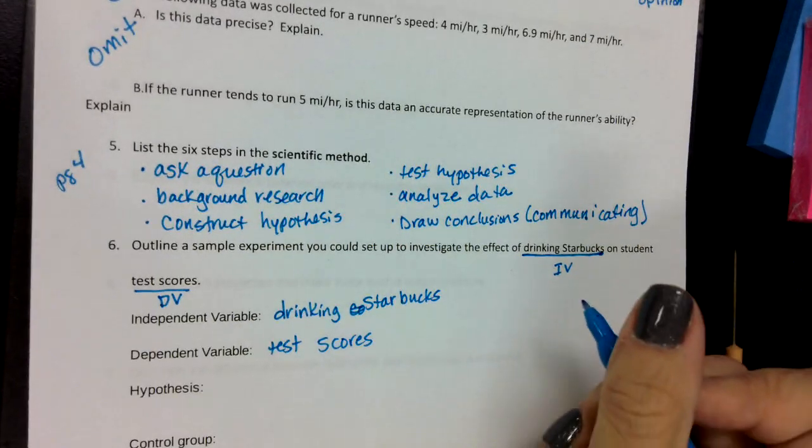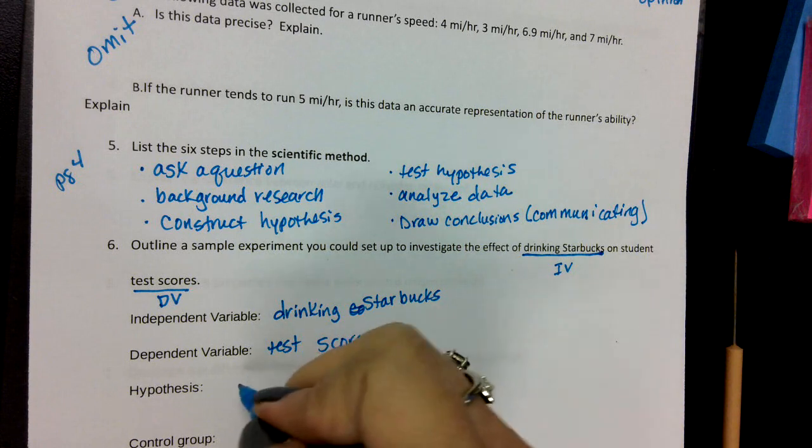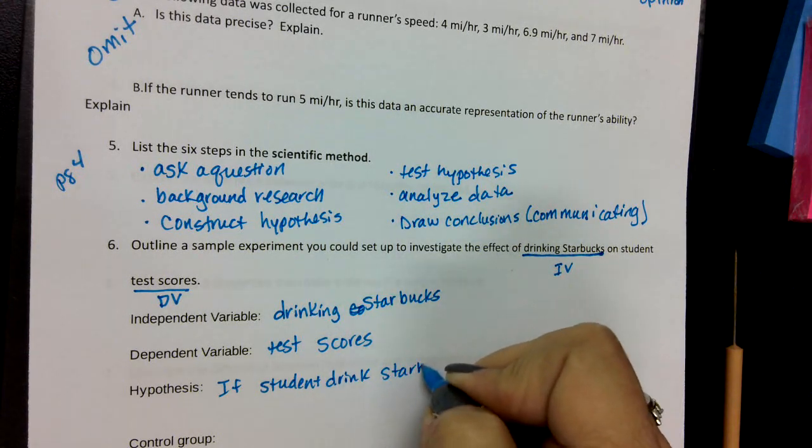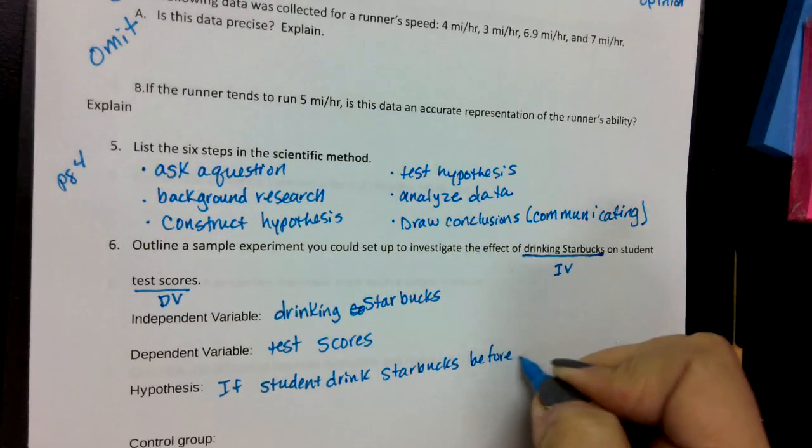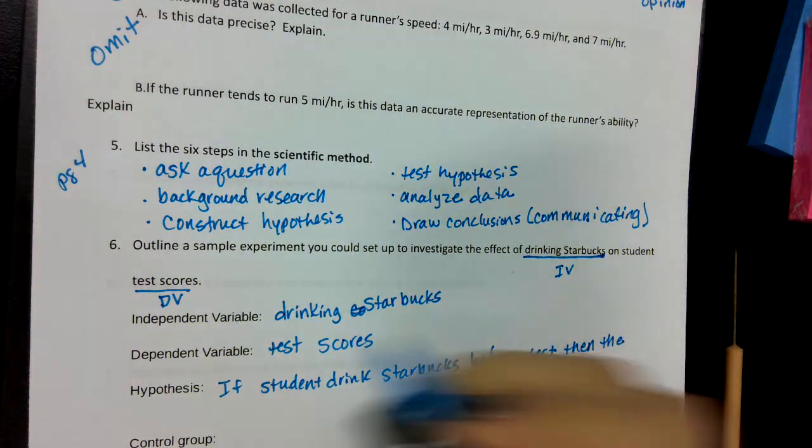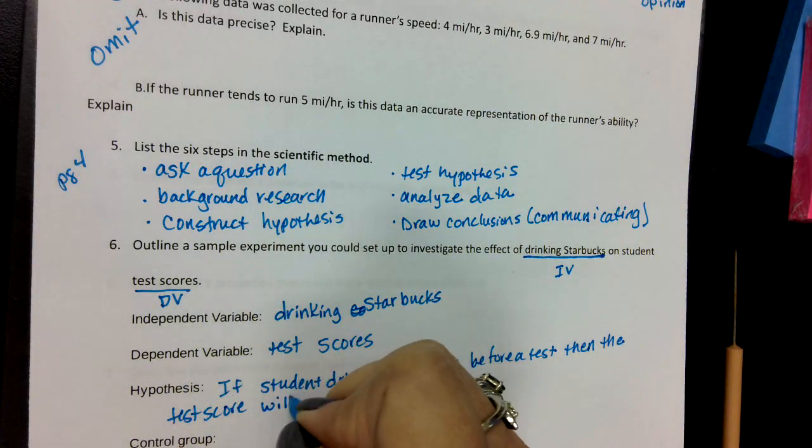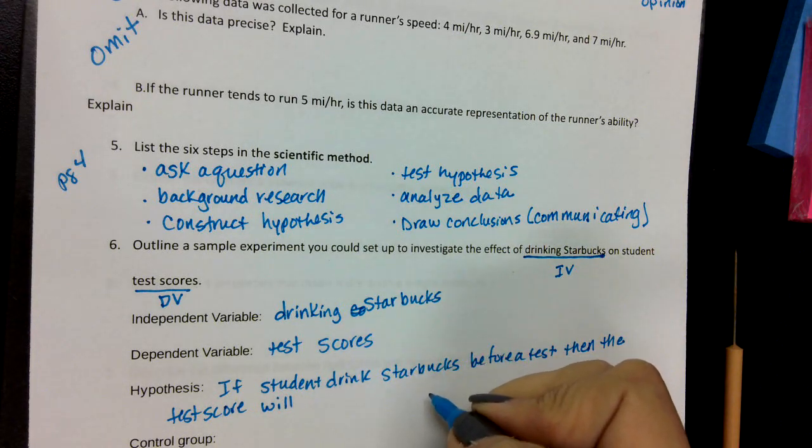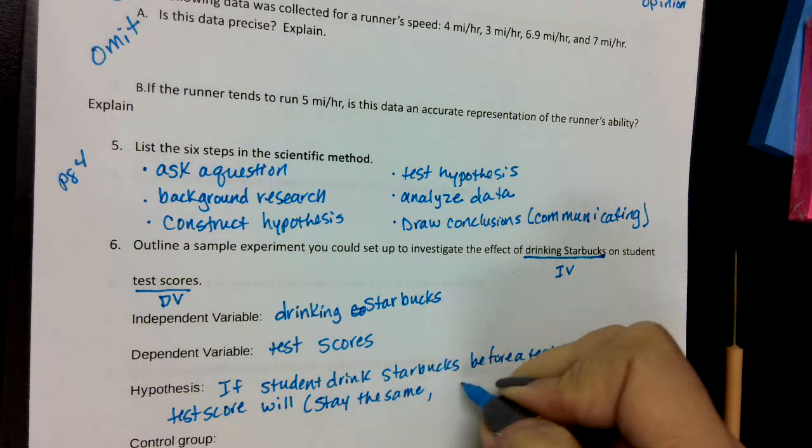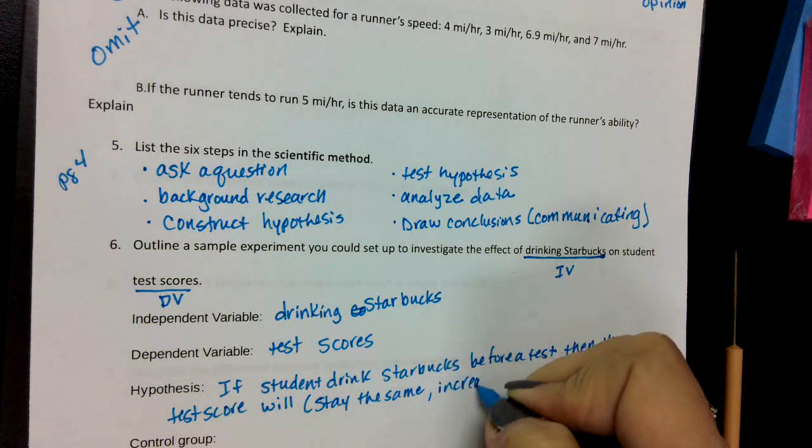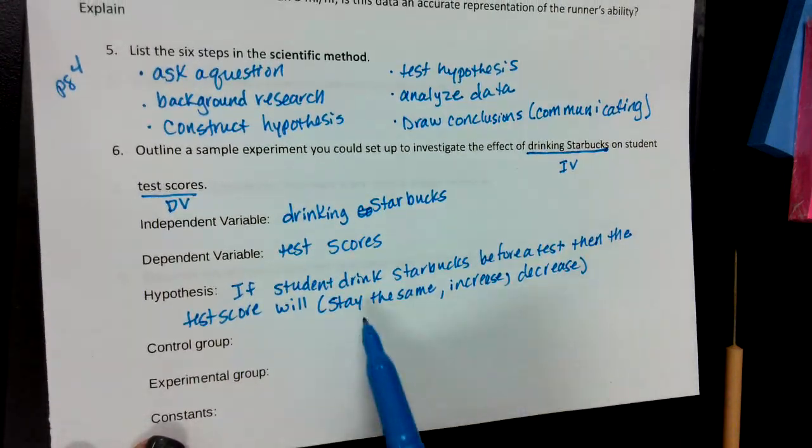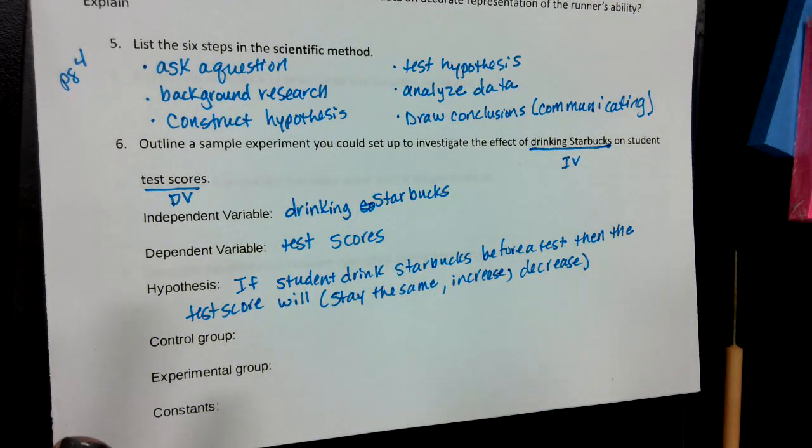So then a hypothesis, you decide how you want to do it following the format that's up above. So if students drink Starbucks before a test, then the test scores will—you could say stay the same. You could say—so you pick one. I'm going to put all three, but you pick one. It can stay the same, increase, or decrease. So the whole point is making a prediction. So it's going to be one of those. So you pick what I put in parentheses. You just pick one. There's not a right or wrong answer for that.